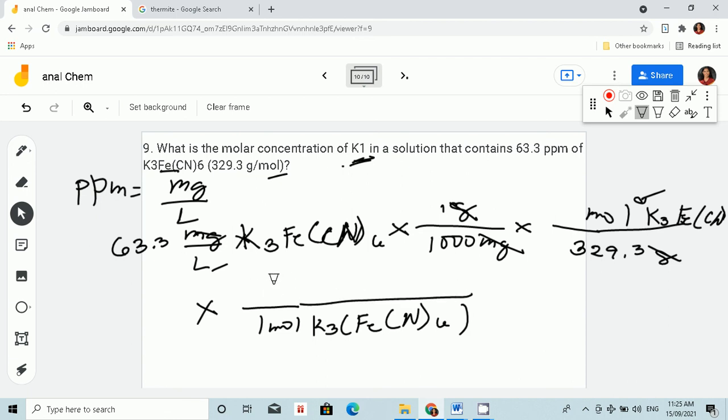We have how many moles of potassium? We have three. We have three moles of K+. So mole here, cancel, cancel.